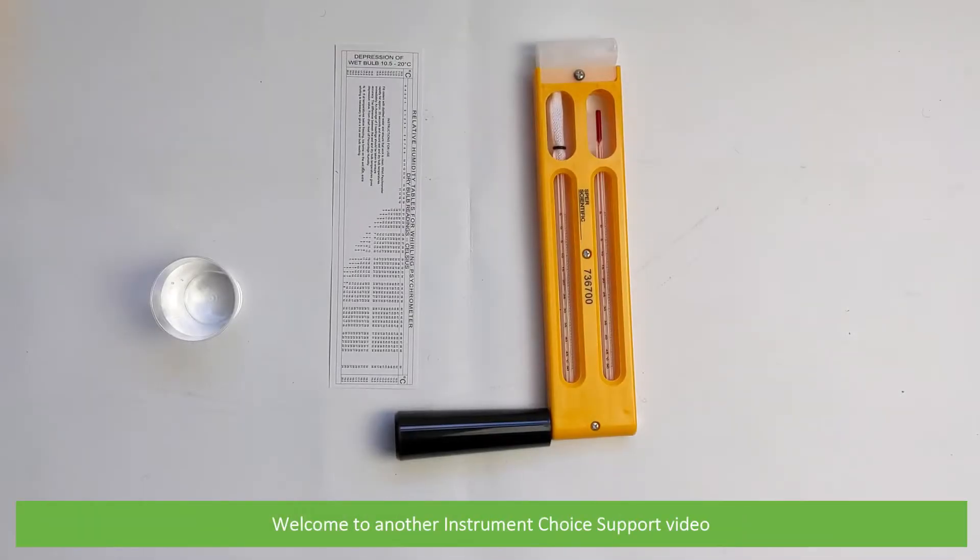Hi and welcome to another Instrument Choice support video. In this video we'll show you how to take a relative humidity measurement using the IC736700 sling psychrometer.